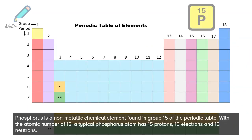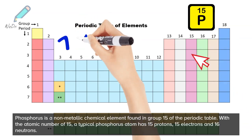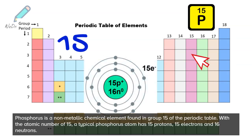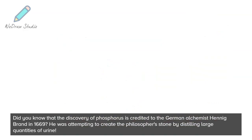Phosphorus is a non-metallic chemical element found in group 15 of the periodic table. With the atomic number of 15, a typical phosphorus atom has 15 protons, 15 electrons, and 16 neutrons.